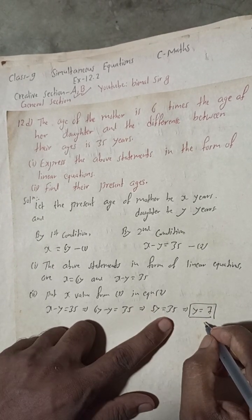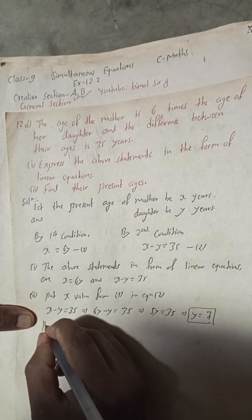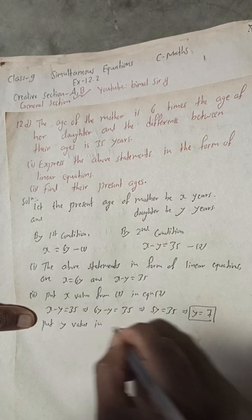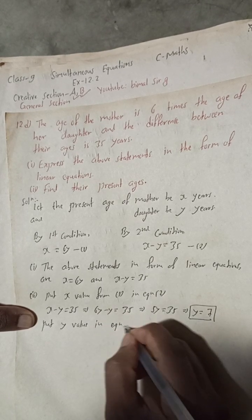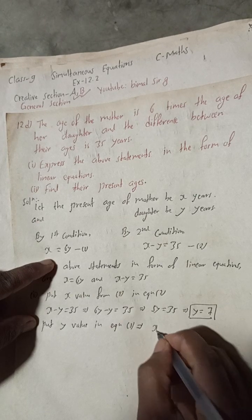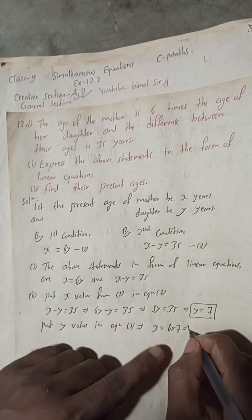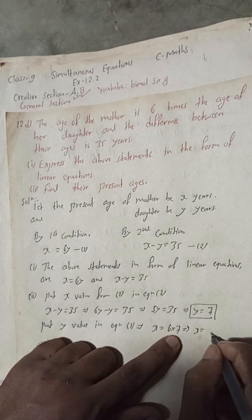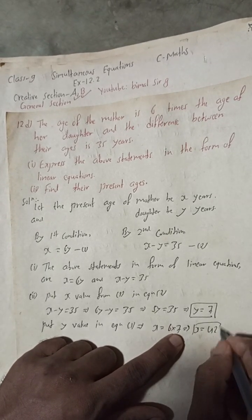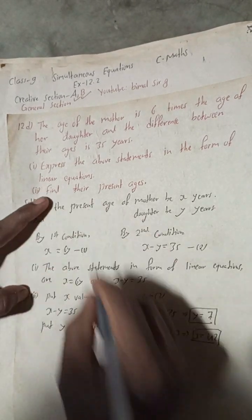Now put the y value in Equation 1. This implies x = 6 × 7, so x = 42. Therefore 42 and 7 years are the required answers.